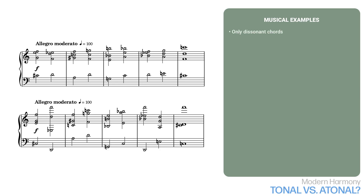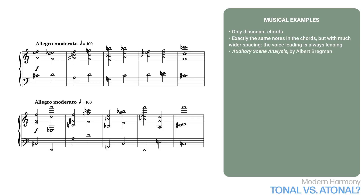Now let's look at another important dimension. This example contains only dissonant chords. The second version uses exactly the same notes in the chords, but with much wider spacing. The voice leading is always leaping. Which of these two sounds more random? Auditory Scene Analysis by Albert Bregman is an important book about auditory perception. One of the main points he brings up is that when sounds occur in similar registers, we're more likely to hear them as part of the same line. This is why it's much harder to make sense of the second example — we hear too many different registers.